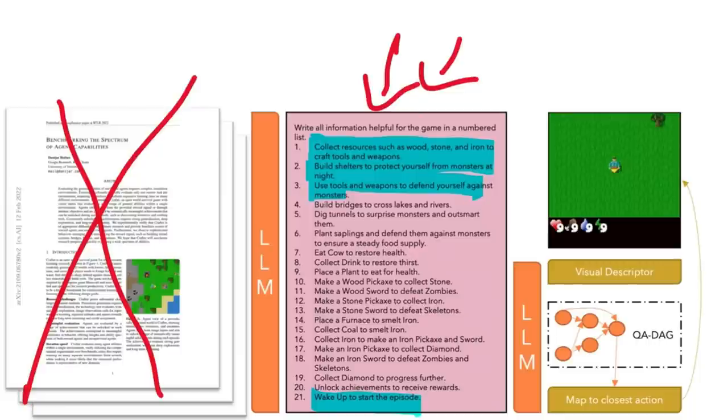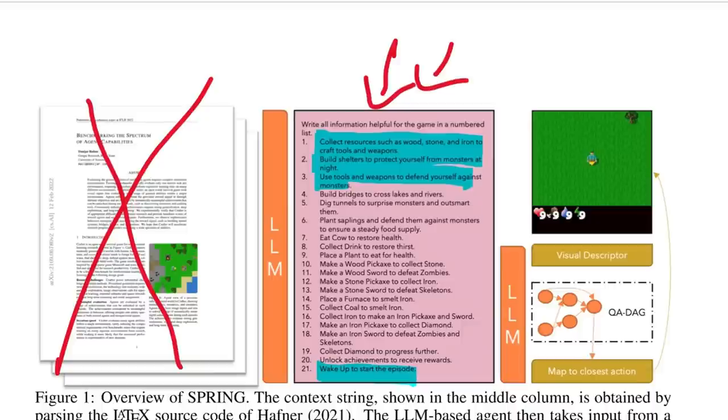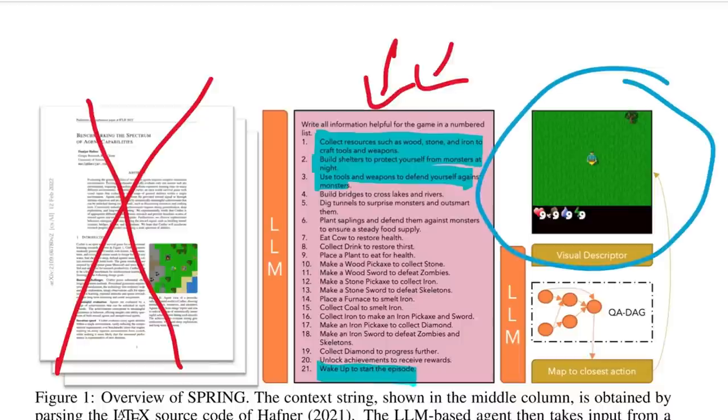Which brings us to playing the game. One of the obvious issues with trying to play a game with an LLM is that the game is displayed through pixels and an LLM takes in text, not pixels. To remedy this, the authors use a visual descriptor module. And this provides a text-based description of the current state of the environment or the current and previous frame.